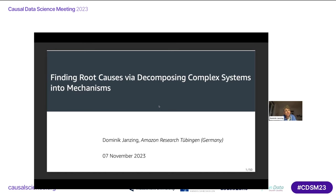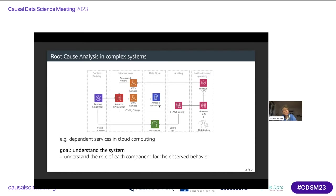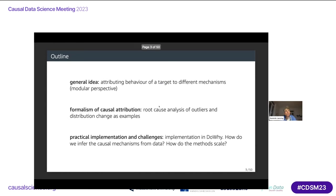So what is this about? Root cause analysis in complex systems — or more generally, understanding complex systems. I work for AWS, and cloud computing is a very complex system with a lot of dependent services calling each other. There's a lot of behavior you want to understand: there are anomalies, there are distribution changes. Let me start with the outline.